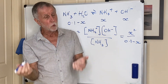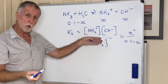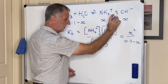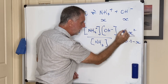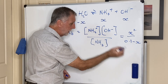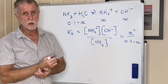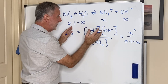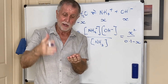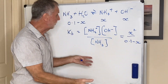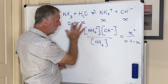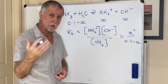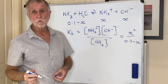Rearranging gives X² = 0.1 × Kb; take the square root to find X, which is the OH⁻ concentration. Taking the negative log gives pOH, and then pH = 14 − pOH. Alternatively, use Kw: H⁺ × X = 10⁻¹⁴, solve for H⁺, then take the negative log. So a weak base is done exactly like a weak acid — first find the OH⁻ concentration using Kb, then convert to H⁺ using Kw, and finally take the negative log to get the pH.